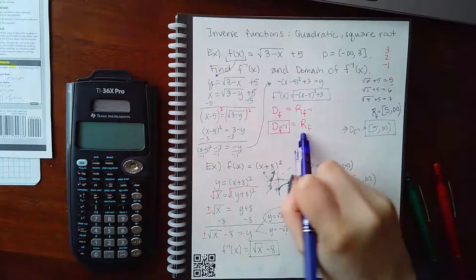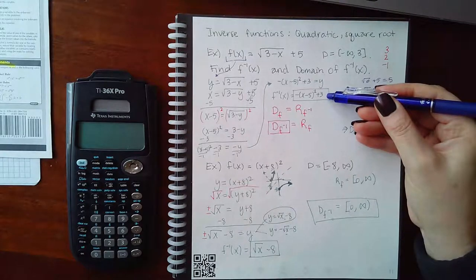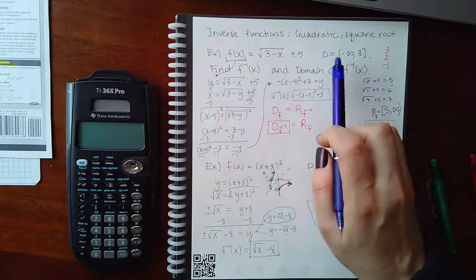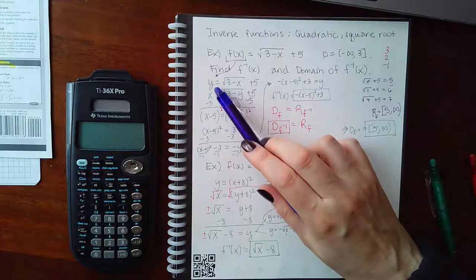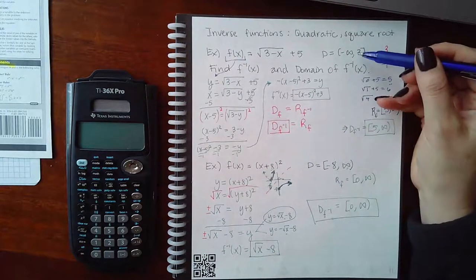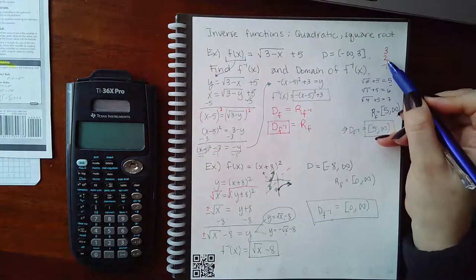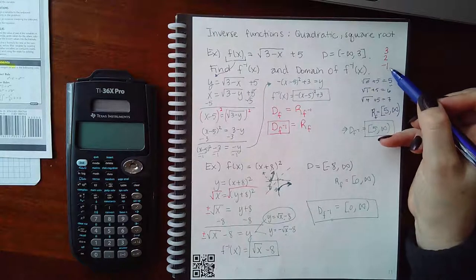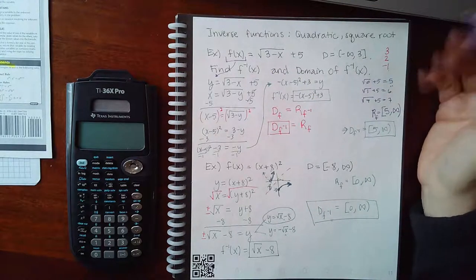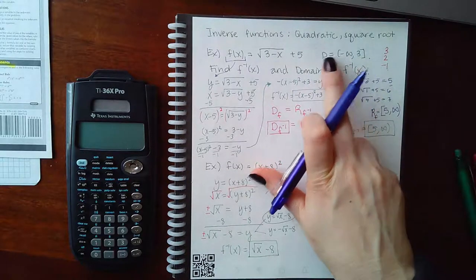We need to calculate the range of f so we can determine the domain of the inverse. You cannot find the domain of the inverse just by looking at the expression you found, because it's only valid for the original x values given. So we start plugging in values from the domain, starting at the endpoint 3, then picking values toward negative infinity. I chose 2 and negative 1 because they give perfect squares inside the square root.